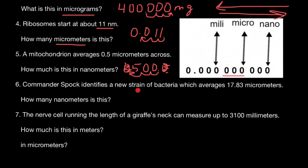Commander Spock identifies a new strain of bacteria which averages 17.83 micrometers. How many nanometers is this? We write 17.83 micrometers and convert to nanometers. Moving micro to nano, we go in this direction — nano is 1,000 times smaller than micro, so we move the decimal point three places to the right: one, two, three. We add a zero and get 17,830 nanometers.